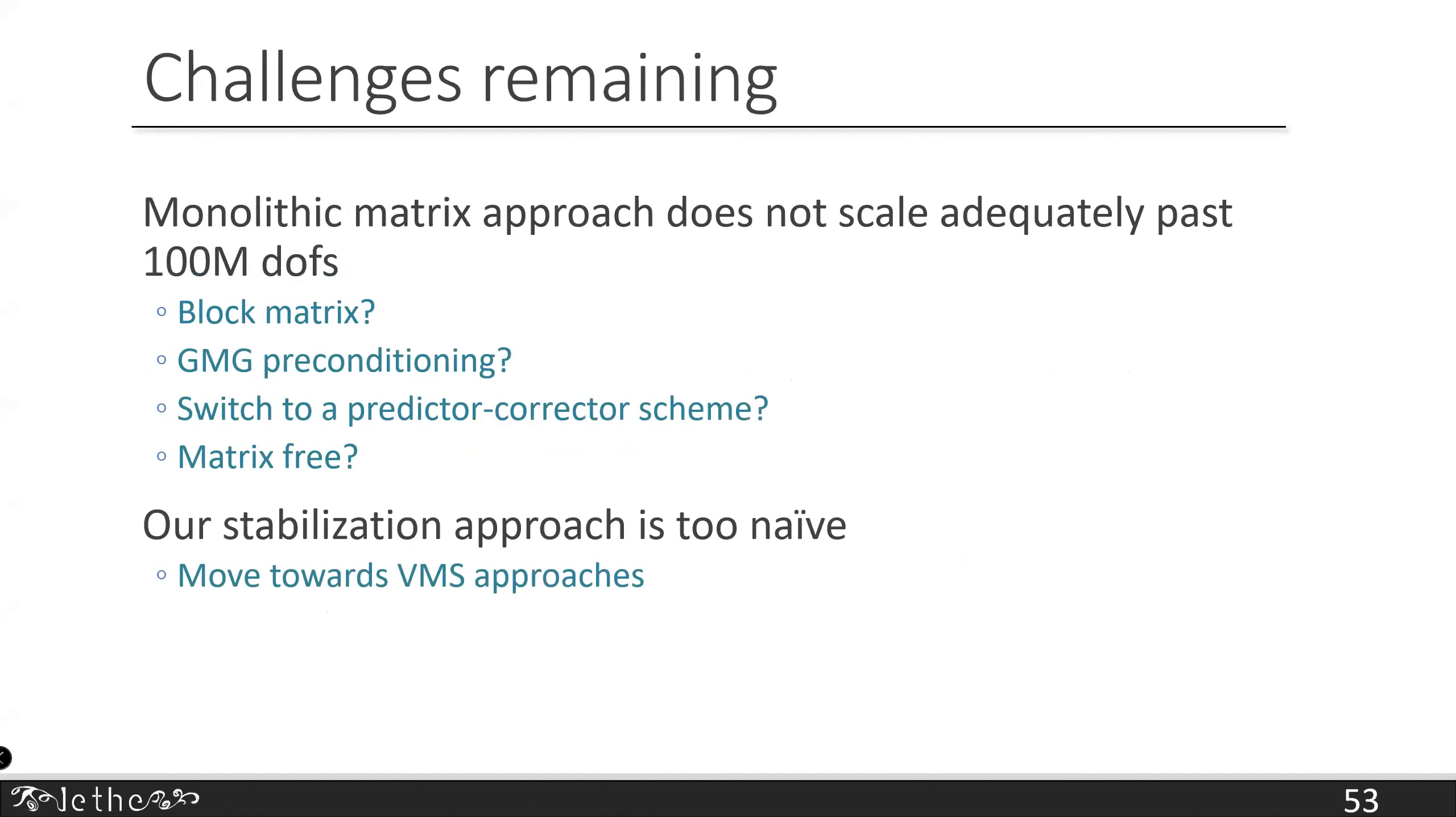Challenges remaining: clearly the monolithic matrix approach we're using does not scale adequately past 100 million degrees of freedom. Using a block matrix strategy, we have it in Lethe but we're not using it because we haven't found a nice block preconditioner for the stabilized equations. Introducing maybe a geometric multigrid, maybe switch to a predictor-corrector type of scheme would be a good idea. Maybe matrix-free is a better solution. These are all avenues we're thinking about and exploring. One key point I'd like to highlight is our stabilization approach is too naive. SUPG and PSPG, they're maybe too diffusive. It's very interesting as we're starting to look into this now to head towards more robust or rigorous variational multiscale approaches. Maybe we're introducing too much artificial diffusion, or maybe this artificial diffusion is too isotropic. Maybe we could get even better results at the coarse meshes we're using.